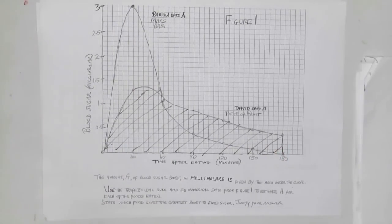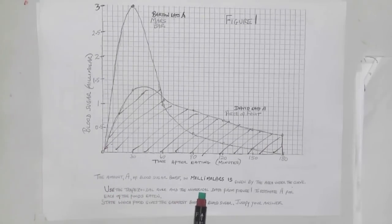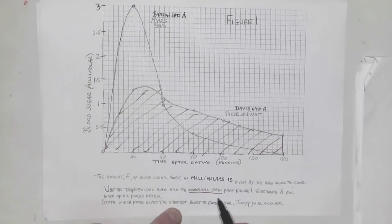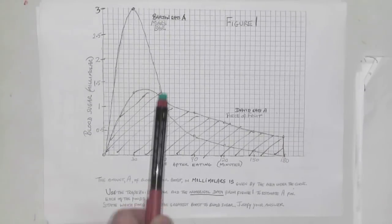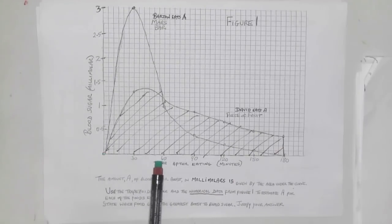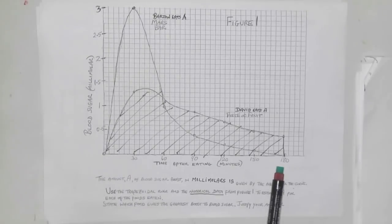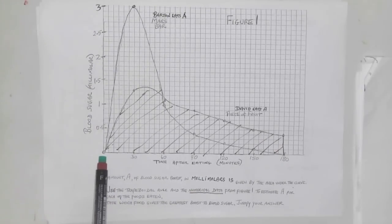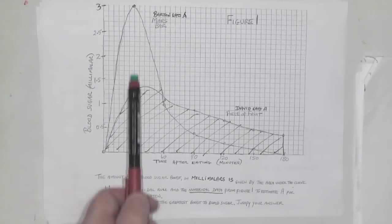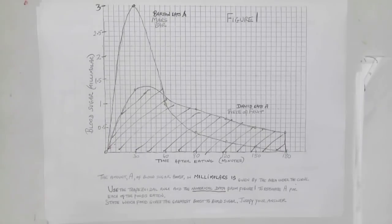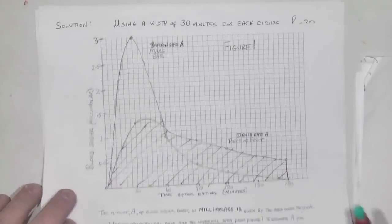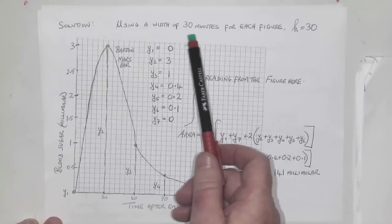The question says use the trapezoidal rule and numerical data from Figure 1 to estimate A for each food, then state which gives the greatest boost and justify your answer. Numerical data means look at the picture and use the numbers: 0, 30, 60, done for a 180-minute or three-hour period. Up the side are millimolars 1, 2, 3. The Mars bar peaks at 3 millimolars then drops back to zero.